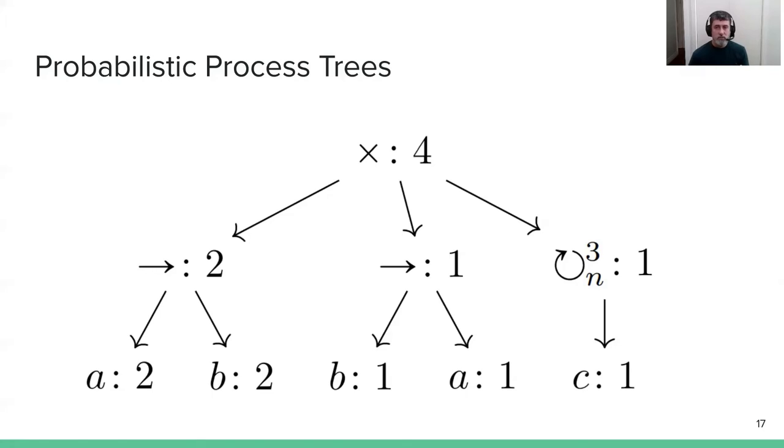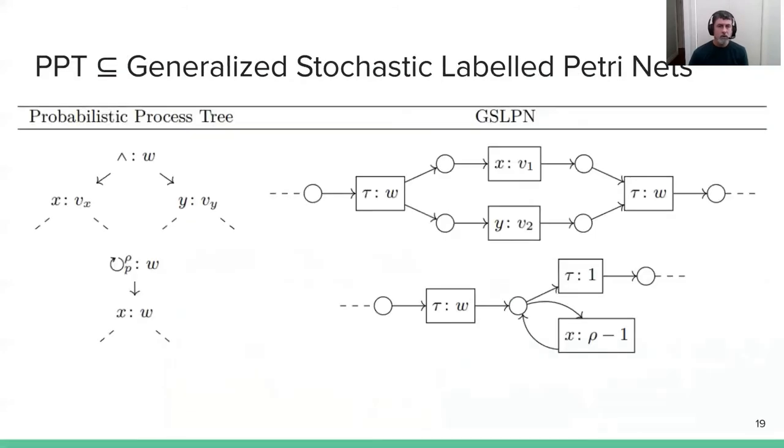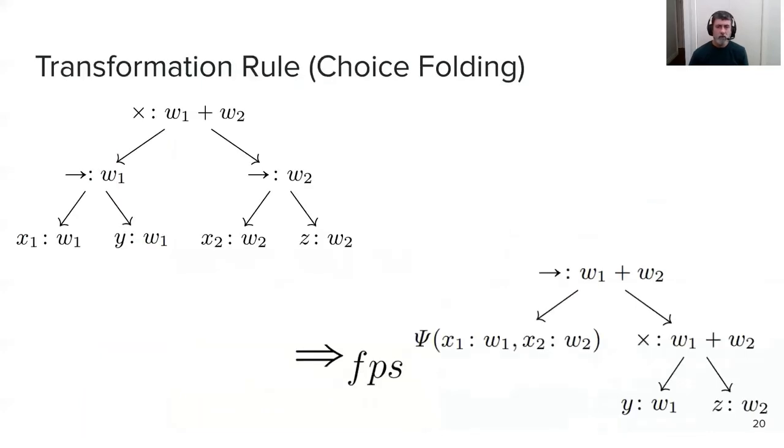That's the internal data structure view that the algorithm works with when identifying areas to do reduction. This is the same concurrent reduction we saw before. It does the reduction on the tree. Because it works on subtrees, this allows these algorithms to be polynomial time. As I mentioned before, these probabilistic process trees are a subset of generalized stochastic Petri nets, specifically they're labeled, so it's GSLPNs or labeled generalized stochastic Petri nets. There is a complete definition in the accompanying paper.